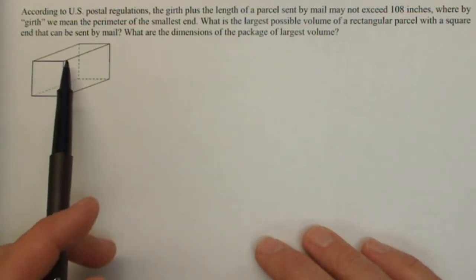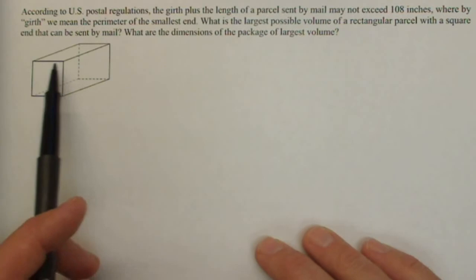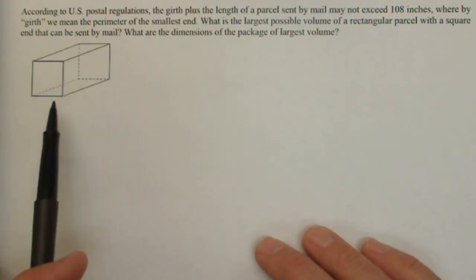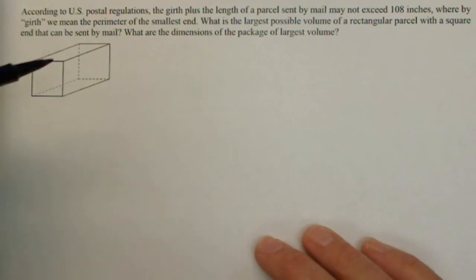The girth is the perimeter of the smallest end. Since it's rectangular, this end is going to have the same perimeter as this end, and then we have the length here. So let's get some variables. We'll label this end x and this length y. Now if this is x, this is also x, this is also x, this is also x.